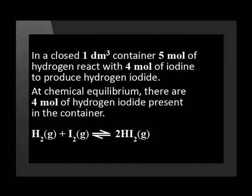In the second graph, look very carefully at the concentrations of each of the reactants at the start. Notice that you are given five moles of hydrogen and four moles of iodine. The first step in sketching the graph is to calculate the concentration of the hydrogen and iodine at the start.